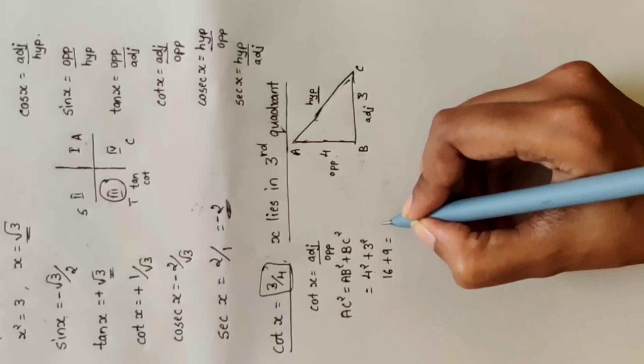Now we have all three side values from the triangle. Let's substitute into each ratio. Sin x = opposite divided by hypotenuse. Opposite is 4 and hypotenuse is 5, so sin x = 4 by 5. First write the numerical values; add the signs in the last step.